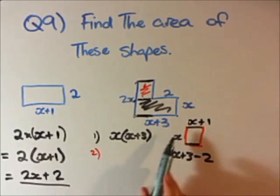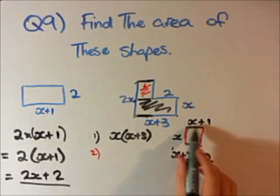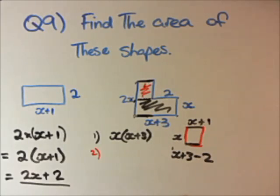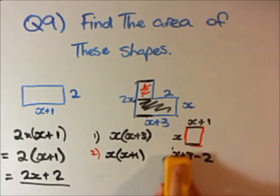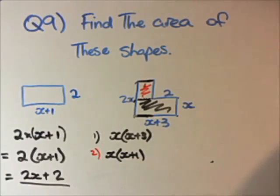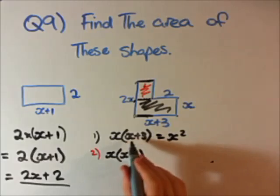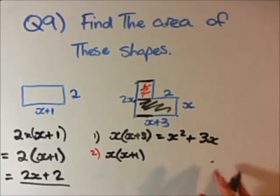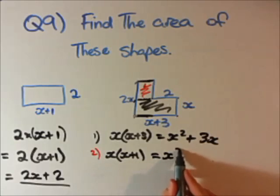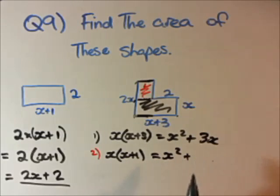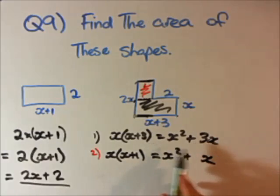The area of this top rectangle is going to be x plus 1 multiplied by x, length times width, to find the area. So we have our two areas, 1 and 2, and to find out the total area, we need to add them together. In one step, I'm going to expand this whole thing. This is going to be x times x is x squared, and x times 3 is 3x. x times x is x squared, x times 1 is x.